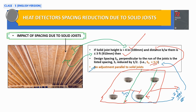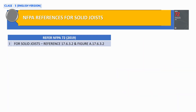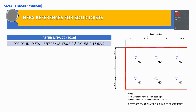As per NFPA 72 reference 17.6.3.2 and the associated figure, we can calculate the distance between heat detectors when solid joists are present in a building.